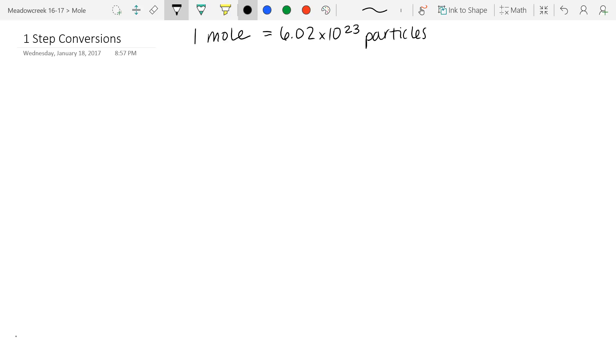Now, the word particles is kind of just like the science word for things. Particles can mean several different things. It could be talking about an atom when you're referring to an element by itself. For example, if you're talking about atoms of carbon or aluminum, it could be referring to a formula unit when you're talking about an ionic compound, such as salt, NaCl.